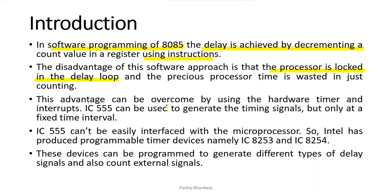Timing operations can also be achieved using the 555 IC, which is basically a timer IC. However, the difficulty lies in controlling the timing signals and interfacing with the microprocessor. Instead of using a 555 IC, we should use the 8253 or 8254 ICs, which are specifically designed as programmable timer devices.